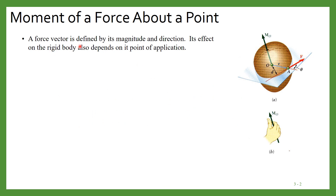A force vector is defined by its magnitude and direction, as we have seen in the previous lectures. Now its effect on the rigid body also depends on its point of application. As you can see in this figure, this is the force vector and the point of application is A.